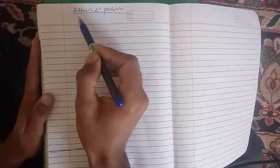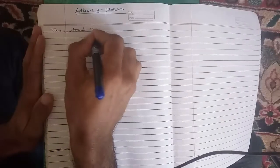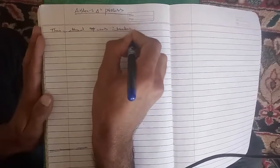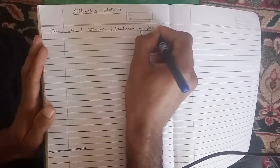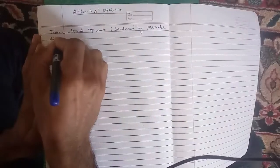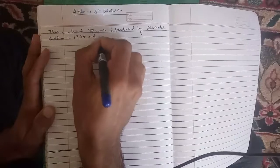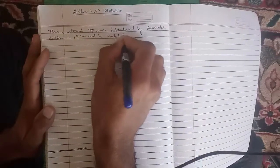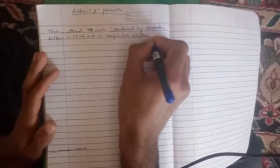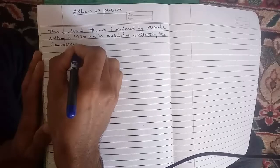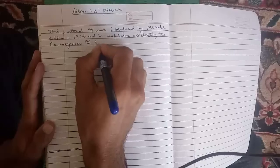Dear students, welcome to my channel Knowledge Faster. Today I will be teaching you about Aitken's Delta Square Process, also known as acceleration of convergence. This method was introduced by Alexander Aitken in 1926 and is useful for accelerating the convergence of sequences.